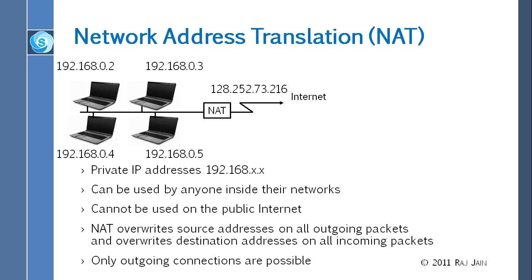The US has an unfair advantage because it invented the technology and got all those addresses and domain names created for free, while other countries are obviously complaining. Even in the US, there are not enough public addresses for everyone, so ISPs like AT&T or Verizon use dynamic addressing — they give you an address when your computer is up, take it back when it goes down, and give it to somebody else. They are recycling the same addresses.